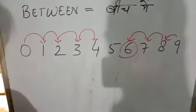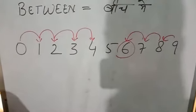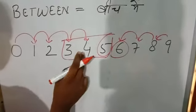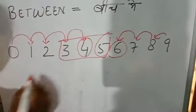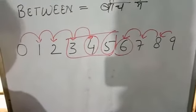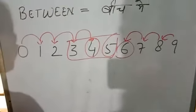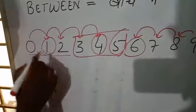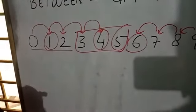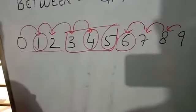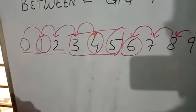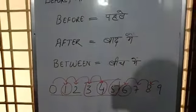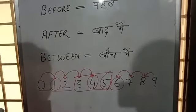Next one is between. Tell me which number will come in between 3 and 5? 4 is coming in between 3 and 5. Like that, which number will come in between 0 and 2? 1 will come in between 0 and 2. I hope you would have understood. So, let's do the exercise to make you more understand.